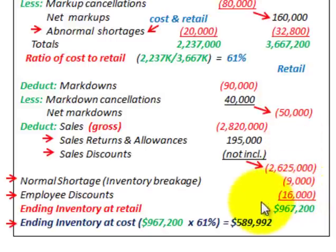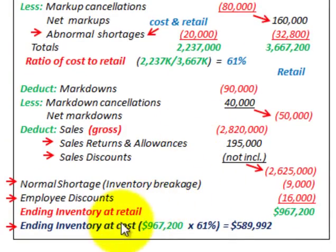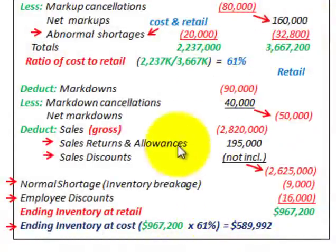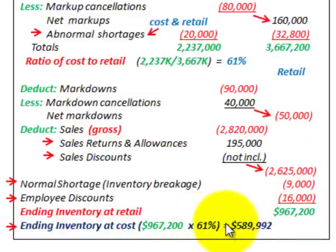Taking all additions and reductions in the retail price column gives us our ending inventory at retail. To find ending inventory at cost, we take the ending inventory at retail of $967,200 and multiply by our cost-to-retail ratio of 61%, giving us ending inventory at cost of $589,992.